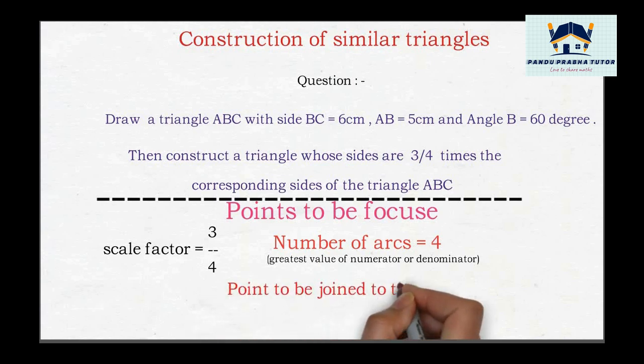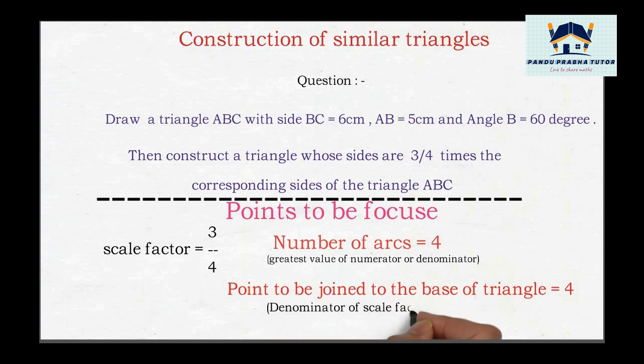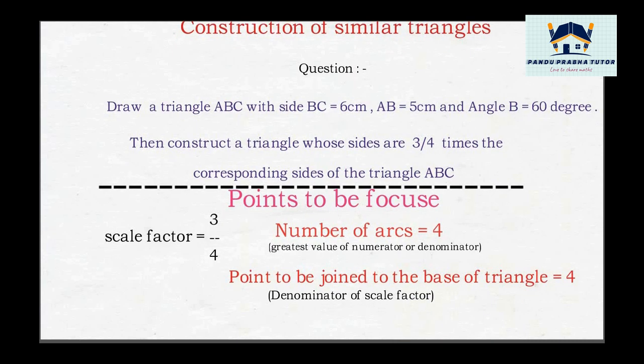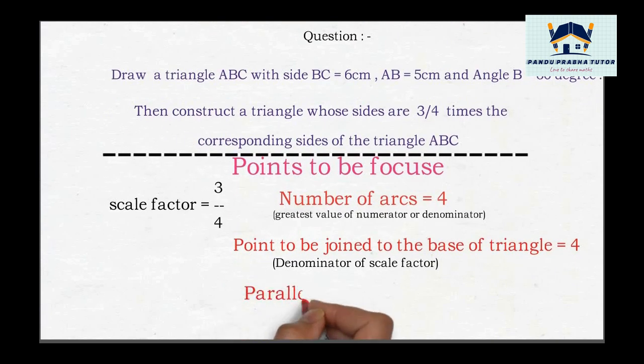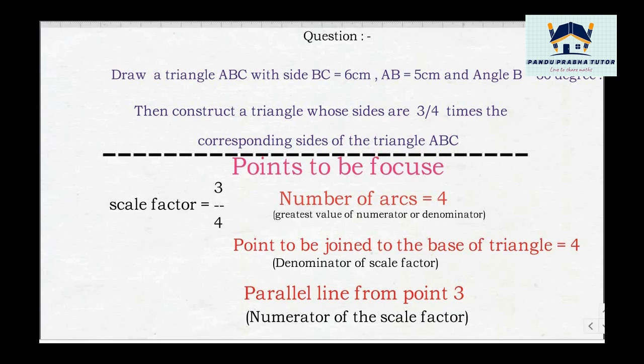Point to be joined to the base of triangle is 4, that is B4, the denominator of the scale factor. Parallel line from point 3, that is B3, the numerator of the scale factor. These are the three important points we have to focus from the scale factor given in the question.